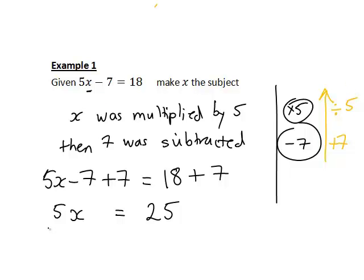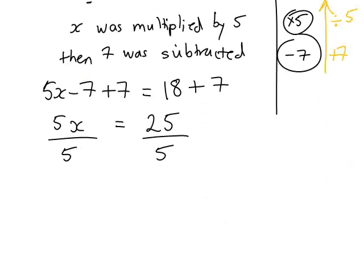And when we do this on the left we get 5x divided by 5. On the right we get 25 divided by 5. And you will notice this has the desired effect because the 5s then cancel on the left just leaving x, which is what we wanted to find.